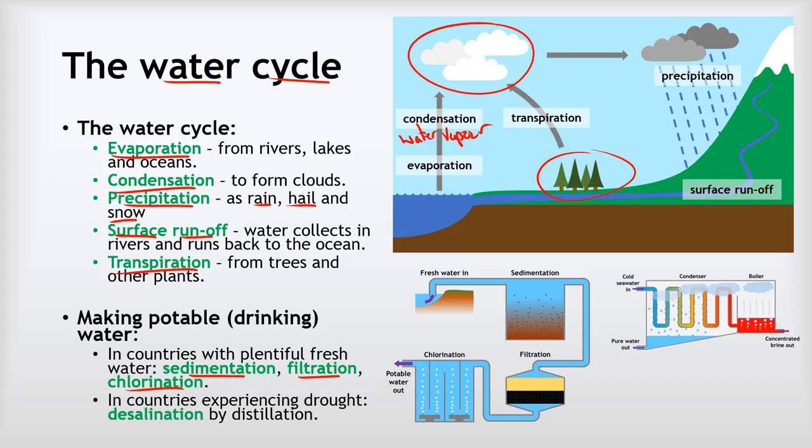In some countries, particularly those that experience drought or those that have very few fresh water reserves, they have to make their drinking water by desalination of seawater. That means removing the salt from seawater. They do that by distillation, which you can see here. We take seawater and boil it to produce steam and then condense the steam back to pure water. Again, there are more details on that in the separating mixtures video in my chemistry playlist.